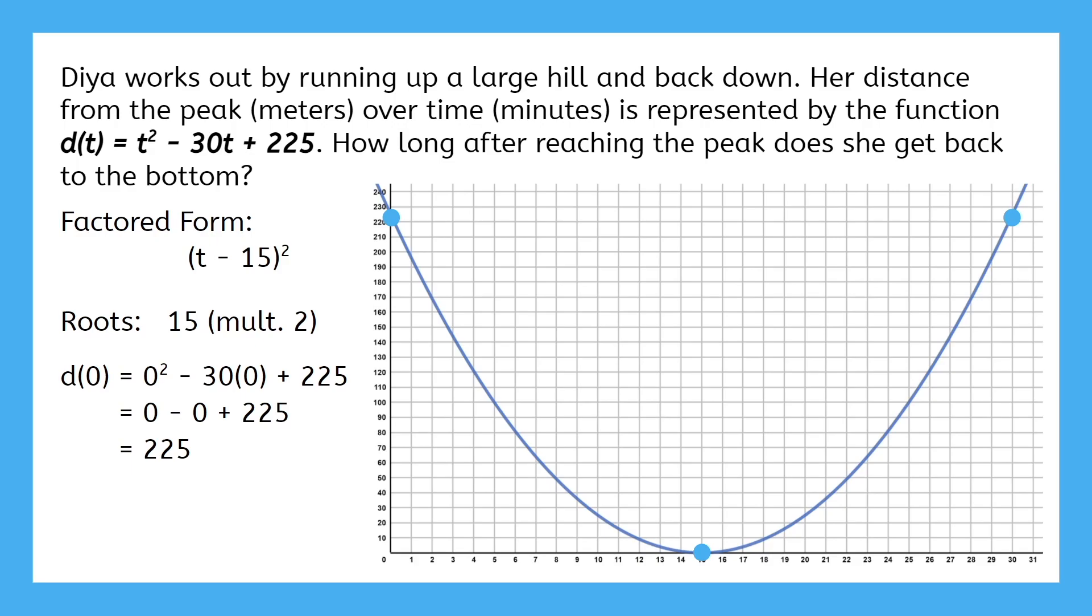Remember, this graph doesn't represent the hill itself, but rather Dia's distance from the top. Lower values means she's higher up the hill. So can you figure out how long after reaching the peak Dia got back to the bottom?